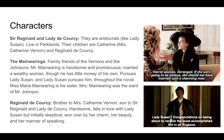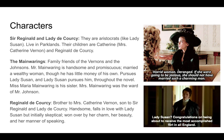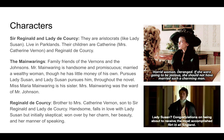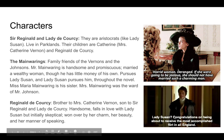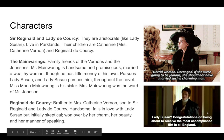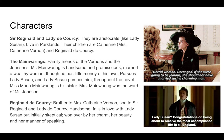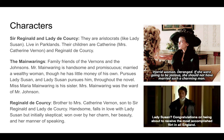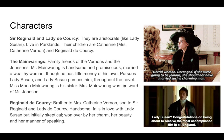Reginald DeCourcy is Catherine Vernon's brother and the son of Sir Reginald and Lady DeCourcy. He's very handsome, upright, and moral. He falls in love with Lady Susan — he was initially skeptical about her, but eventually he's won over by her charm, her beauty, her manner of speaking, and the arguments she makes. In the film, his character says: 'Lady Susan, congratulations on being about to receive the most accomplished flirt in all England.' Lady Susan is shown talking to her friend Alicia Johnson, saying of Mrs. Manwaring: 'A horrid woman — deranged. If she were going to be jealous of her husband, she should not have married such a charming man.'